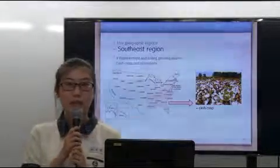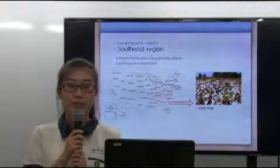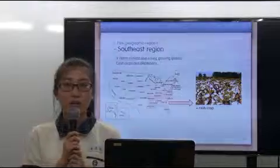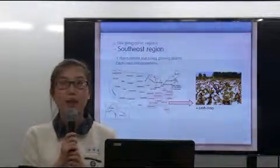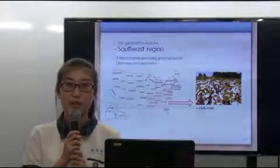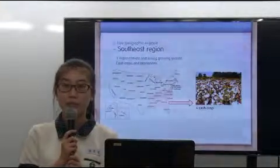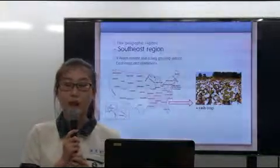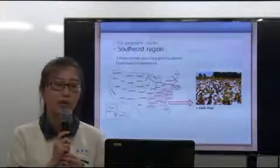The Southeast includes 12 states. The Mississippi River flows through the western parts of the region. The warm climate and long growing season helps farmers grow different kinds of cash crops. The first cash crops for plantation owners were tobacco and cotton, but now peaches and oranges are two important cash crops.